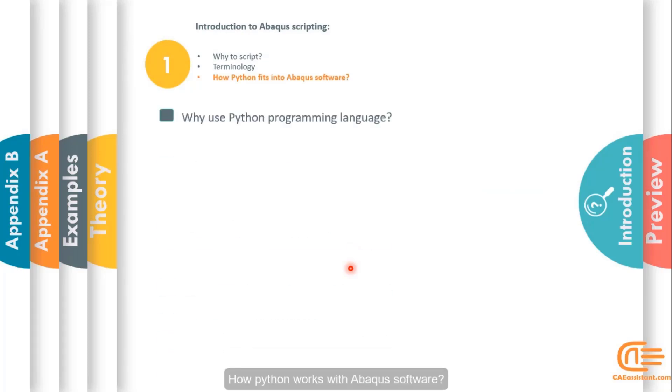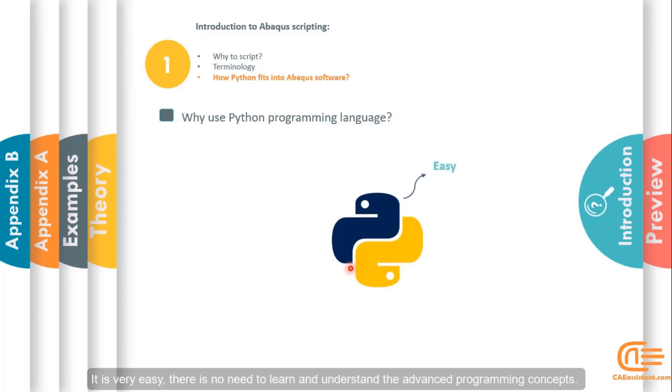But how does Python work with Abacus software? At first, we explain why we choose Python programming language over other languages. It is very easy. There is no need to learn and understand advanced programming concepts. It is free and open source software, no restriction on copying, embedding, selling, etc.